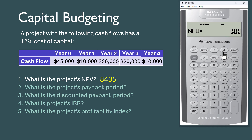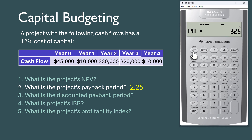If you scroll down, you will see NFV, which is the net future value. Now, if you have the BA2 Plus Professional like I have here, you can scroll down again and you will see PB, which is payback period. This feature is not available in the non-professional BA2 Plus calculator. Press Compute and you can see the payback period is 2.25 years. If you scroll further down, you will see DPV, which is the discounted payback period. Press Compute and it gives 2.85 years.